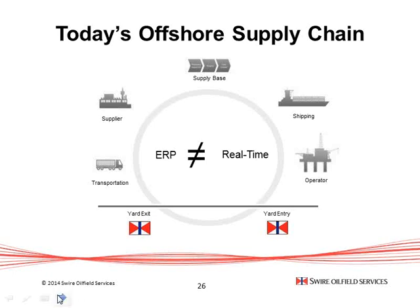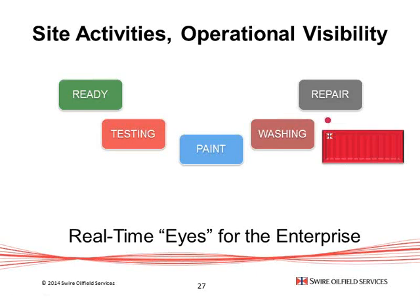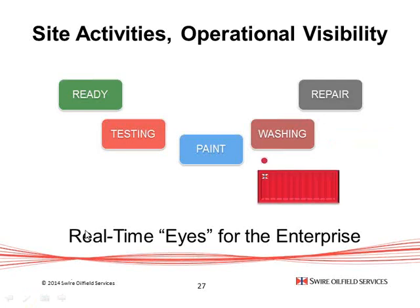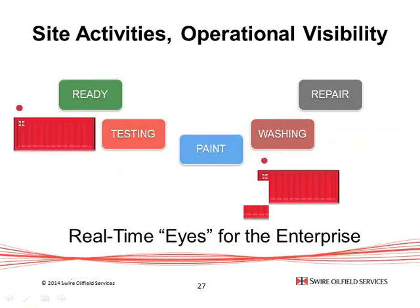The prior slide gave you the offshore, over-the-road, over-ocean view. The asset moves from repair through washing through to paint testing and so on — these are very much operational activities that go on on a typical site. The point here is that you have the macro view over the road and over the ocean, and then the need from an operational perspective to apply different technologies to achieve asset visibility on site. That's really what we're depicting in these two slides.